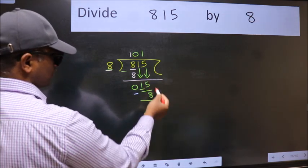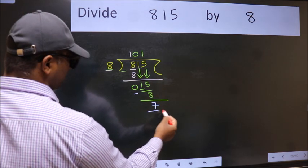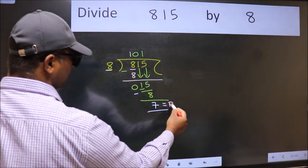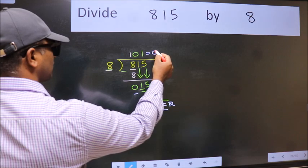No more numbers to bring it down. So, we stop here. This is our remainder and this is our quotient.